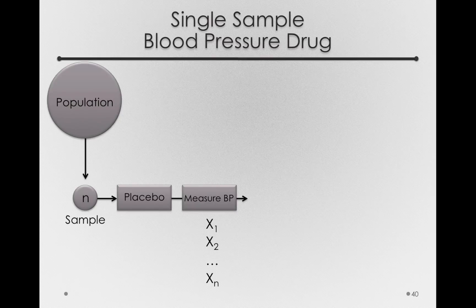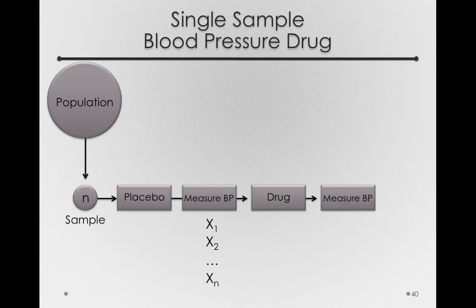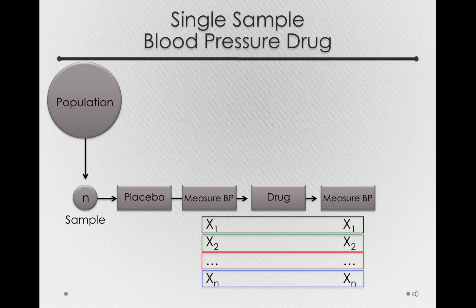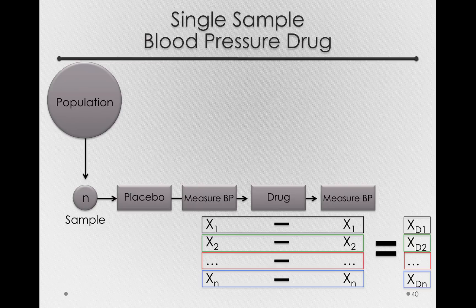For the following two weeks we'll provide these individuals with the real drug. They won't know that anything has changed because the medicine will look the same, but in this period they'll actually be on the active ingredient. We'll measure blood pressure at the end of the two weeks, giving us a second set of measurements for each individual. Critically, we'll be comparing each individual to themselves — each person will be their own control. X sub 1, measured once after the placebo and once after the real drug, will give us a difference score showing how much the drug made a difference for them.